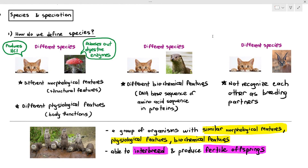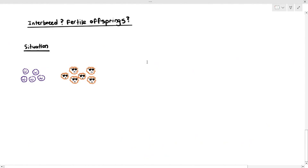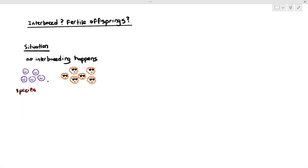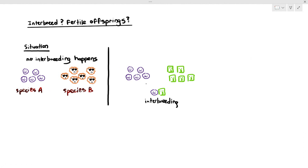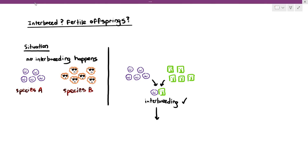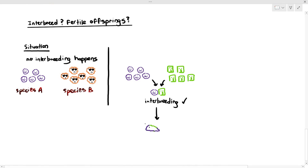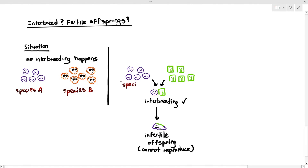What does it mean to interbreed and produce fertile offspring? If you have two populations and when put together they do not interbreed or recognize each other as partners because they are quite different, scientists classify them as species A and species B — they are different species, no interbreeding happens. Also, if two populations interbreed but the offspring is infertile — meaning that offspring cannot grow up and reproduce — we would also say those two populations are different species.